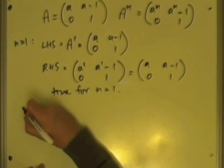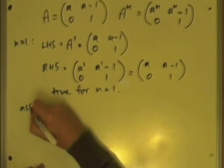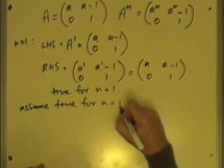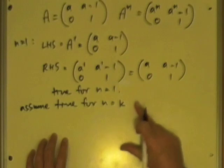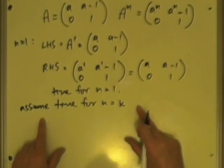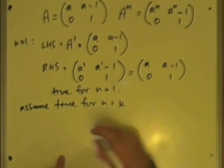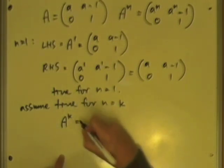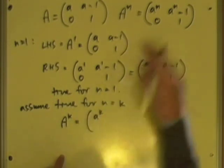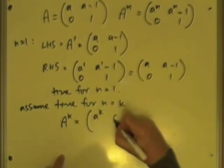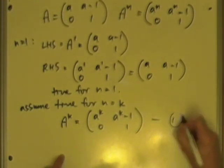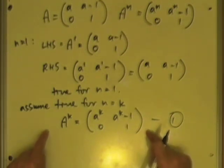Now, jump ahead a bit. Make a little assumption here. Assume that it's true at some arbitrary point K. This is called the inductive hypothesis. Assume it's true at some point K. Well, that would mean that if that were true, and that's just an if, if that were true, then A to the K should turn out to be, just replacing the N by K's, A to the K, A to the K minus 1, 0, 1. I'll call that 1 just now. That's the inductive hypothesis. I've got to call that into play if I'm doing a proof by induction.